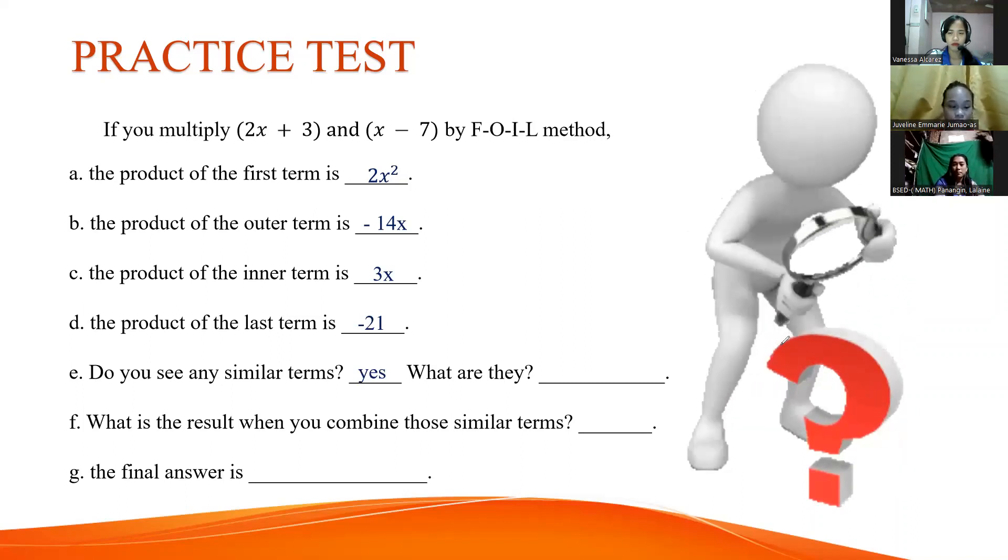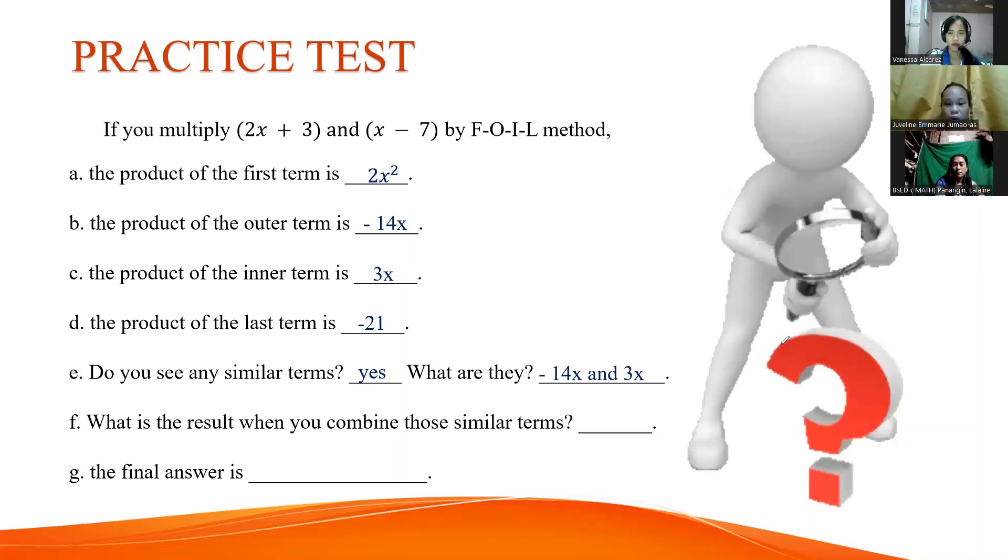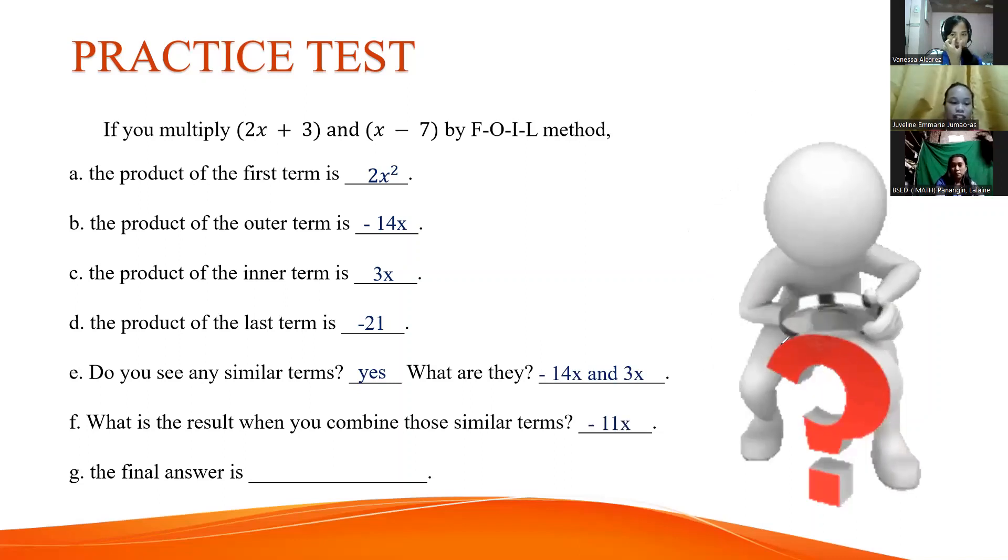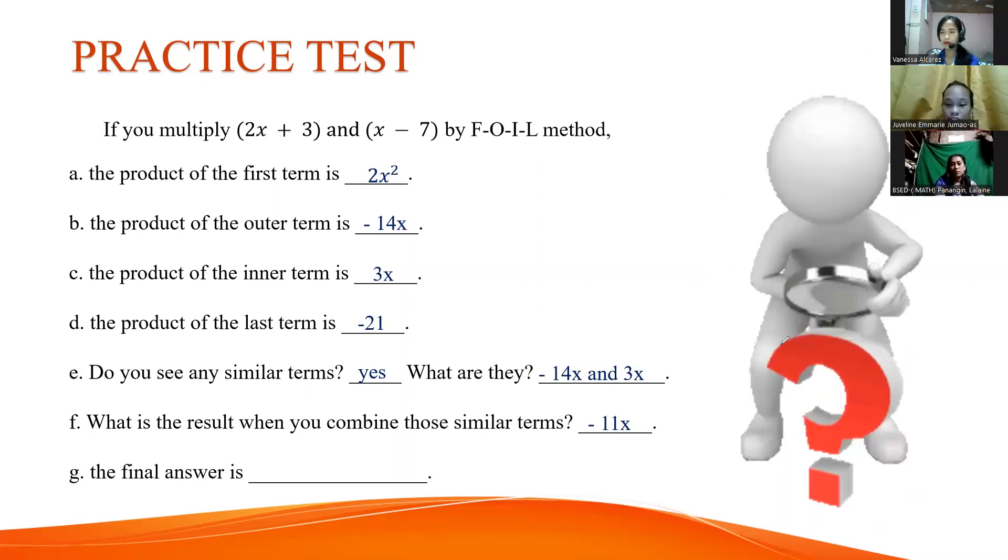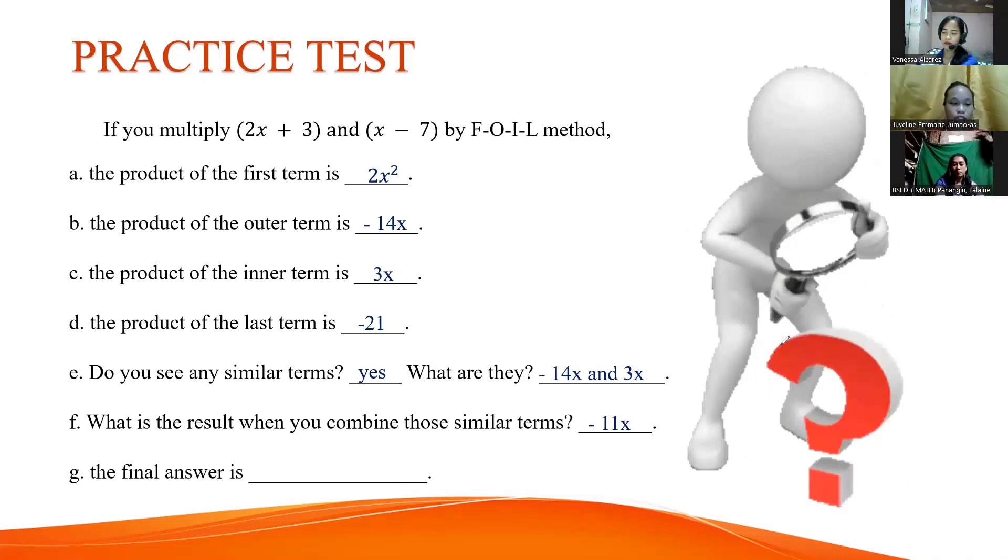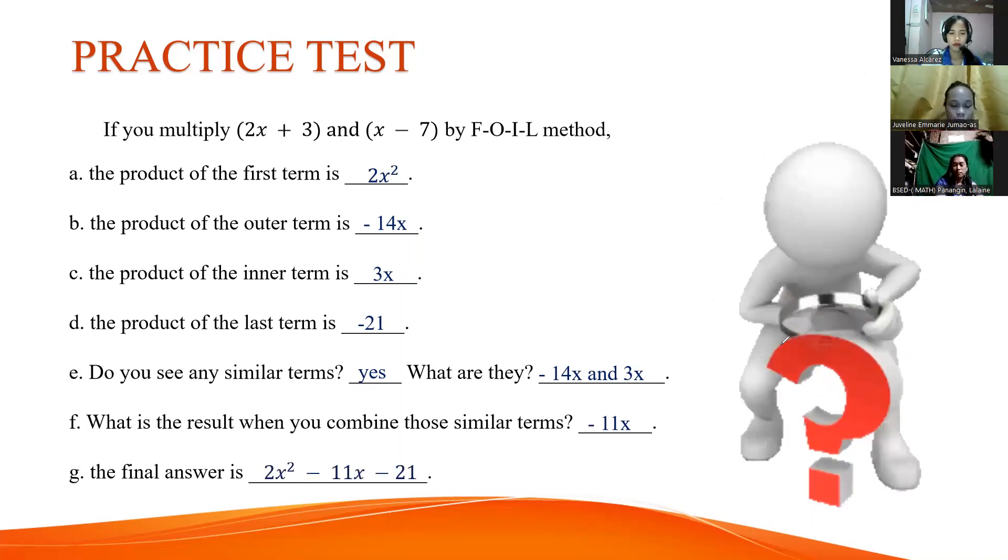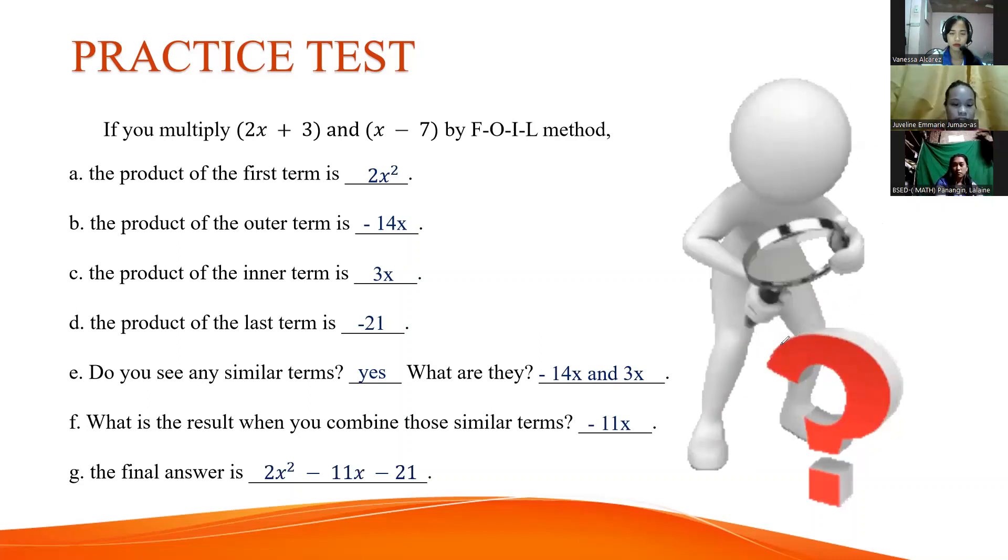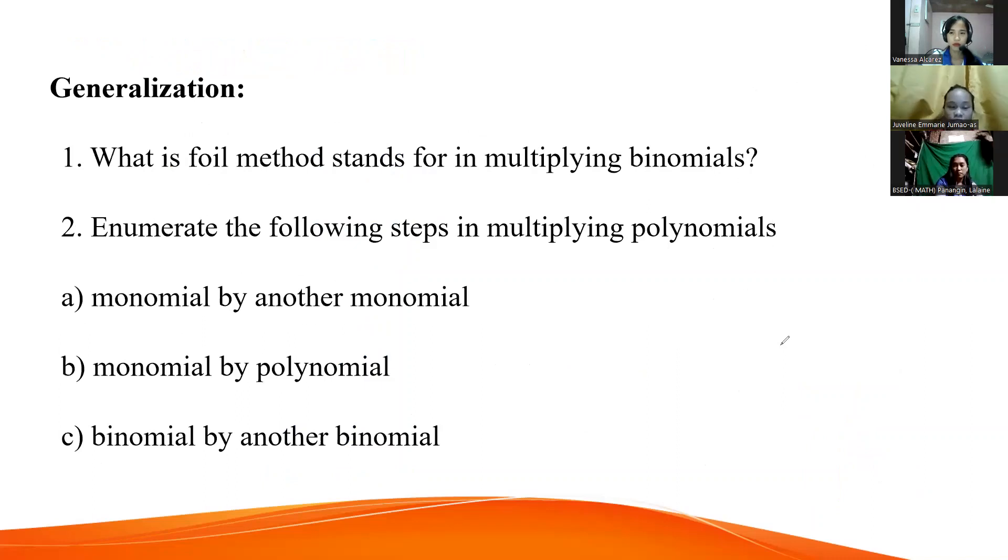Letter E is Vinny. What are they? Negative 14x and 3x. Thank you, Vinny. Ico is F, negative 11x. I'm sorry for that. The last one will be Barbie. What is the final answer? The answer is 2x squared minus 11x minus 21. Thank you so much, everyone, to volunteer our practice test.